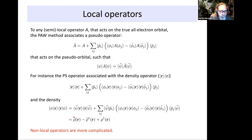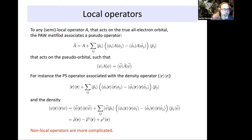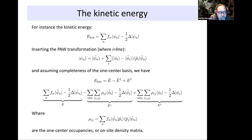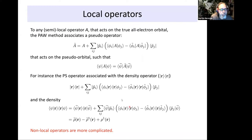We have a part of the density represented on the plane wave grid, and then two terms that live in the PAW spheres and are represented on radial logarithmic grids — an all-electron term and a pseudo term as well. That is the case for any semi-local operator A. Assuming completeness of the one-center basis — that is an important point — we assume our one-center basis is complete enough to guarantee it.